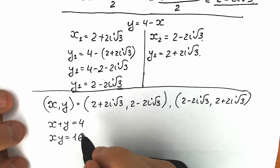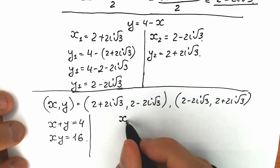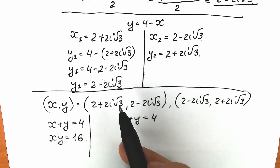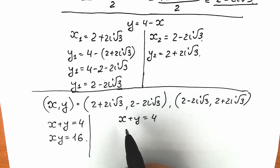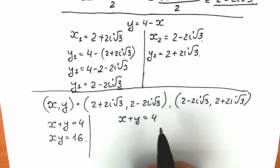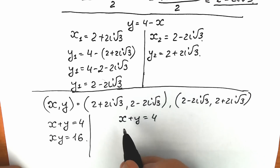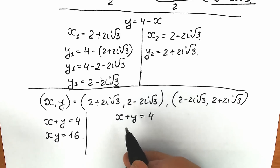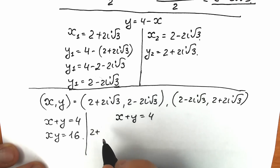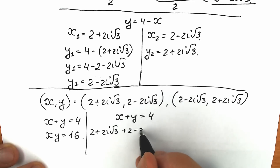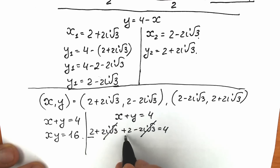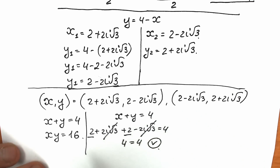Let's verify the first equation. We only need to check one pair because addition is commutative. So (2 plus 2i√3) plus (2 minus 2i√3): the imaginary parts cancel, and 2 plus 2 equals 4. So 4 equals 4 — our first equation is absolutely correct.